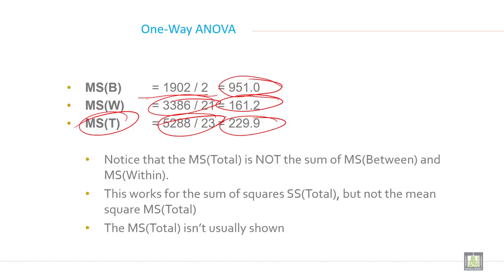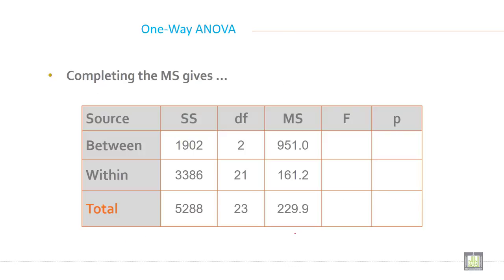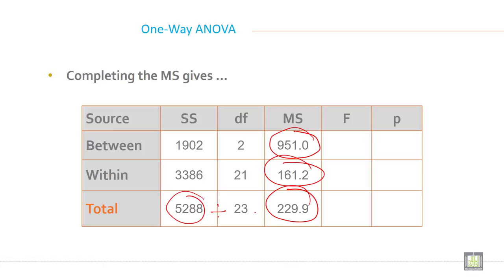Notice that MS total is not the sum of MS between and MS within. This works for the sum of squares — SS total — but not for the mean square MS total. The MS total isn't usually shown. When you divide the SS total by 23 you get MS total; it is not the sum of MSB and MSW.